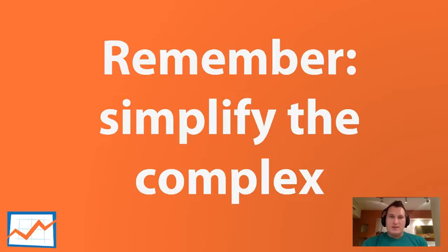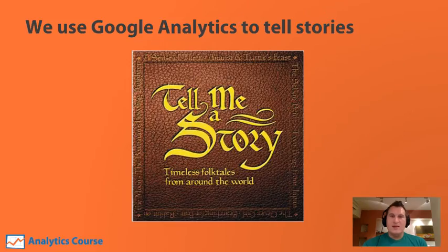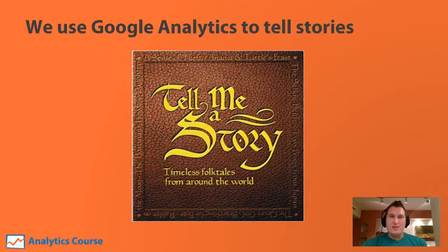And when all else fails, remember this — we all want to simplify the complex. We don't want to make more complexity; we actually want to simplify what we're seeing. That can be as simple as telling a story from the Google Analytics data — looking at the reports we collect and using the information we have to tell a story to our organization. Going back to lesson two, when we talked about the difference between data, information, knowledge, and decision making — basically we want to create that information and knowledge we can use to make better decisions.